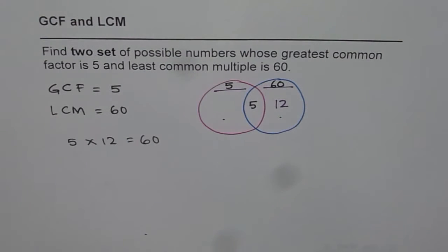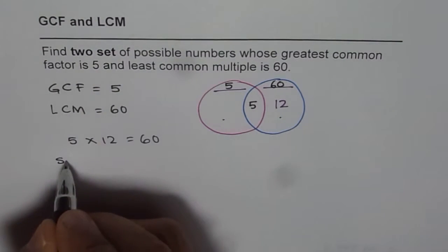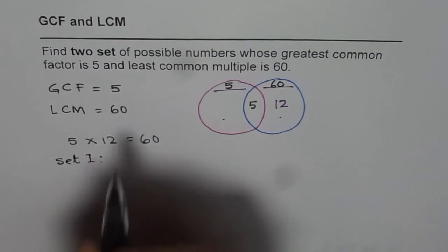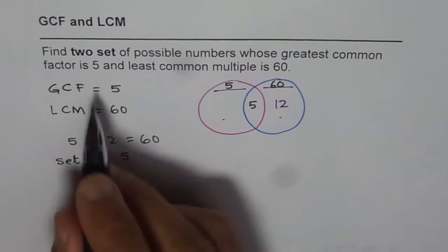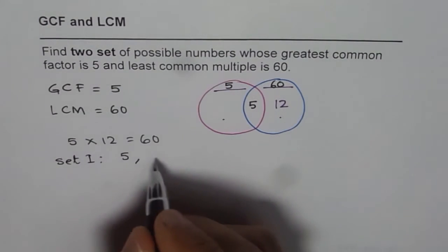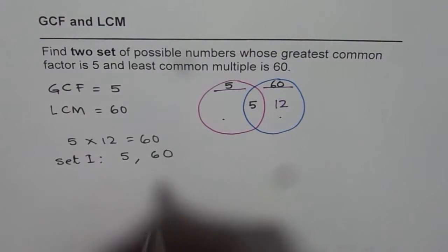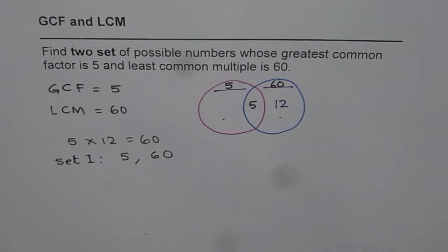As I said earlier, set 1 is always the set of numbers which includes the greatest common factor and the least common multiple. So 5 and 60 is definitely one of the sets. So that is one of our solutions.